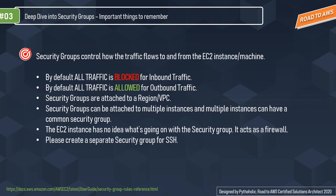Let's recap the important points about security groups. First, security groups control how traffic flows to and from the EC2 instance — they are like virtual firewalls. By default, all inbound traffic is blocked and all outbound traffic is allowed. Security groups are attached to a particular region, so to use a security group from a specific region you have to be in that region. They can be attached to multiple instances, and multiple instances can share a common security group.